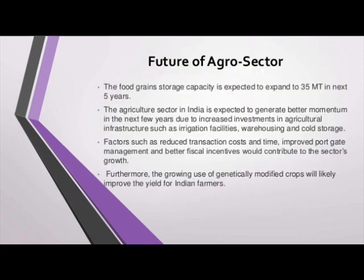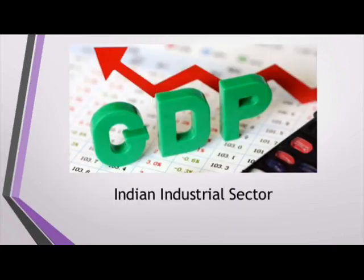The food grains storage capacity is expected to expand to 35 million tons in the next 5 years. The agriculture sector in India is expected to generate better momentum in the next few years due to increased investments in agricultural infrastructure such as irrigation facilities, warehousing and cold storage. Factors such as reduced transaction costs and time, improved port gate management and better fiscal incentives would contribute to the sector's growth. Furthermore, the growing use of genetically modified crops will likely improve the yield for Indian farmers.